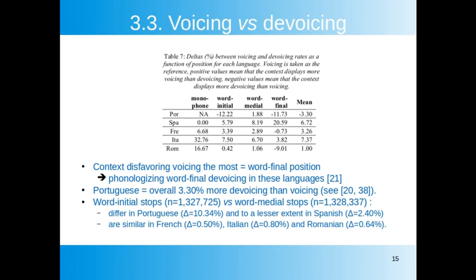Portuguese has a peculiar behaviour, being the only language displaying overall 3.3% more devoicing than voicing, which is nonetheless in line with previous studies. Comparing similar datasets, word-initial stops — historically supposed to favour devoicing — and word-medial stops — historically supposed to favour voicing — differ in Portuguese and to a much lesser extent in Spanish, but are similar in French, Italian, and Romanian.